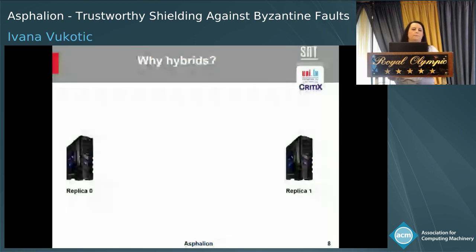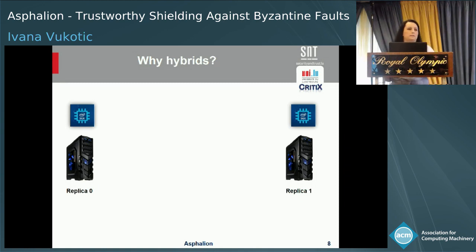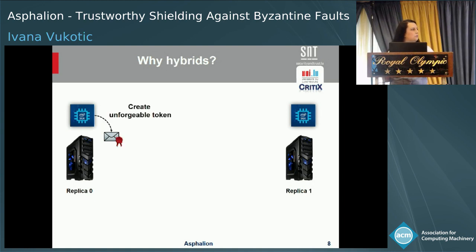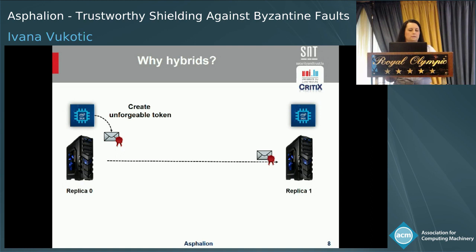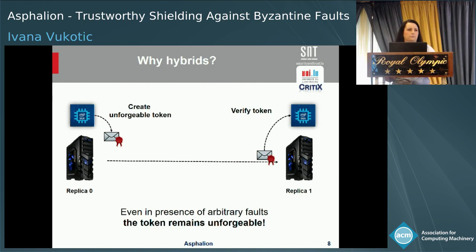Let's look at a simple example. Assume we have two replicas — replica 0 and replica 1 — that can fail arbitrarily, but are each equipped with a trusted component such as Intel SGX, which can only fail by crashing and otherwise always produces correct results. When replica 0 wants to send a message to replica 1, it calls its trusted component, which creates an unforgeable token. Upon receipt, replica 1 calls its trusted component to verify the token. Even in the presence of arbitrary faults, the token remains unforgeable thanks to the trusted component.